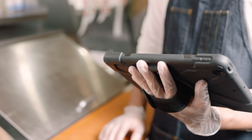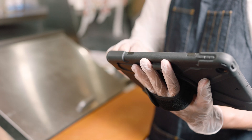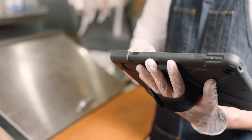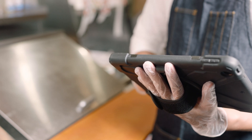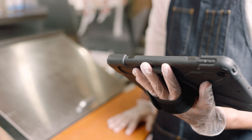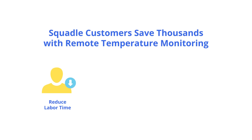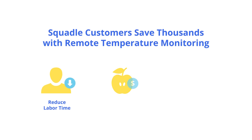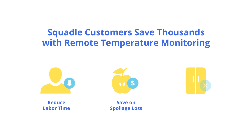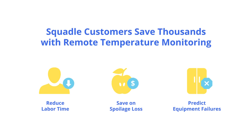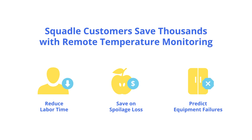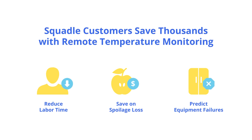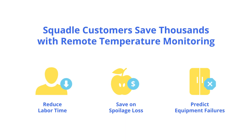Quickly realize your return on investment when employees spend less time troubleshooting equipment issues, and your business saves money when Squattle detects temperature changes before an escalation. Squattle customers have saved thousands in food spoilage due to equipment failure. Remote temperature monitoring alerts notify the store manager right away, preventing significant revenue damage.